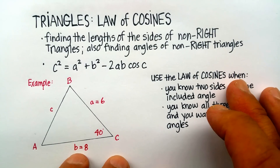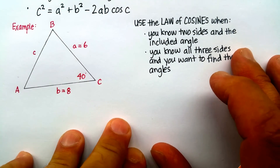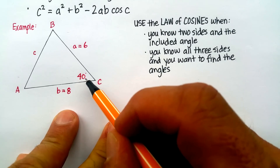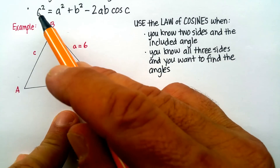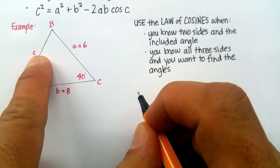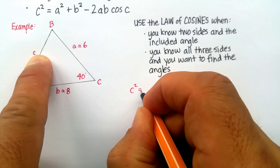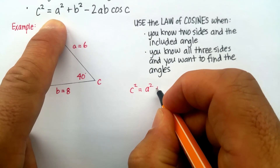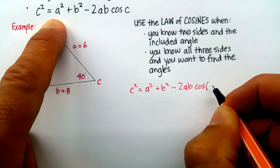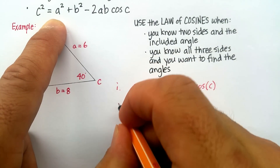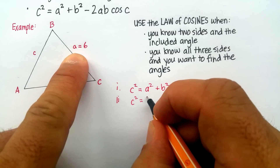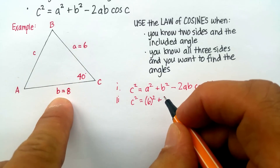Let's do an example. Here we know two sides and the included angle. Since we know that one of the angles is C, we can use this form because we know what the cosine of C is — it makes it a little easier. We don't know the length of c, so we write: c squared equals a squared plus b squared minus 2ab cosine C. We know that a is 6 and b is 8.